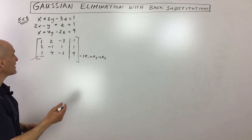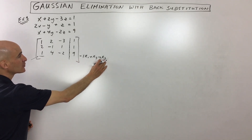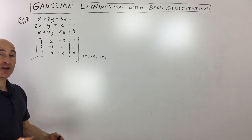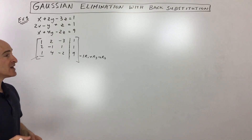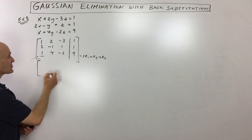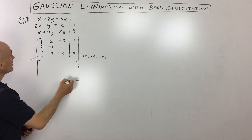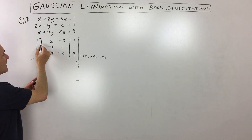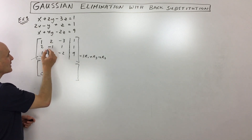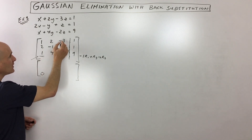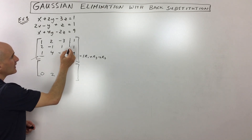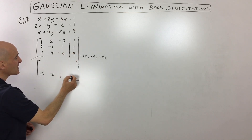I want to warn you right from the beginning: it's good to make a little note about what you're doing in case you make a mistake and want to track the steps. There are a lot of little arithmetic errors that can happen. So: negative one plus one gives us zero; negative two plus four is two; positive three plus negative two is one; and negative one plus nine is eight.